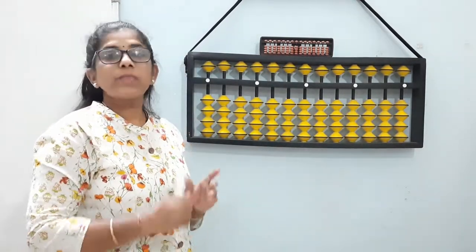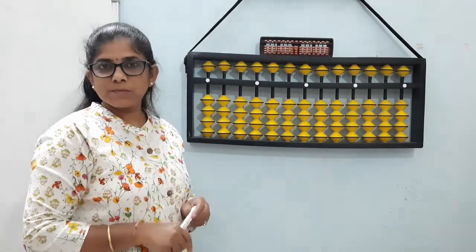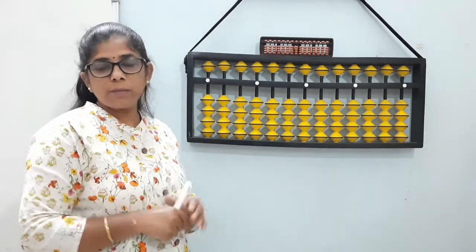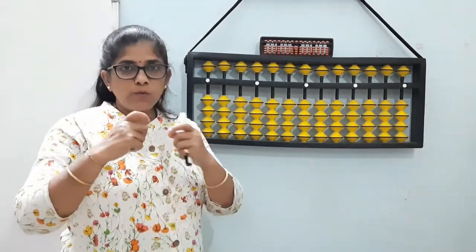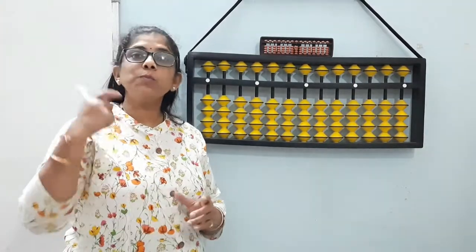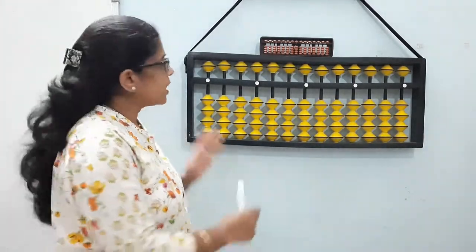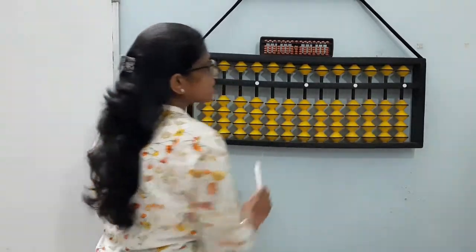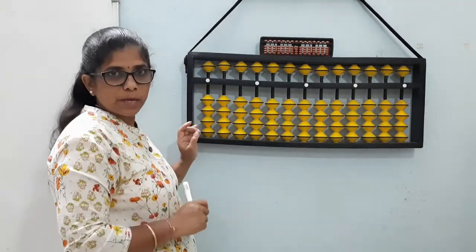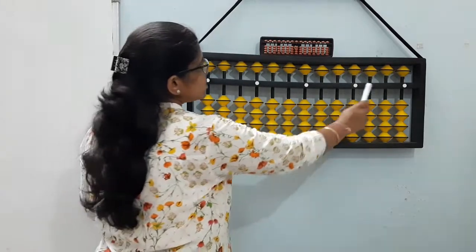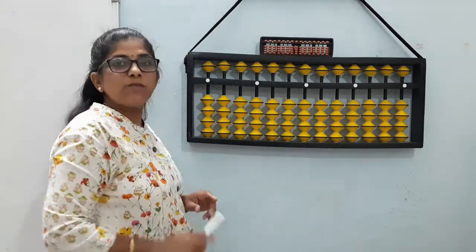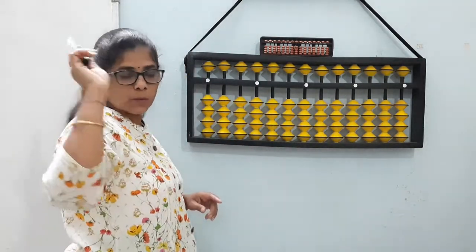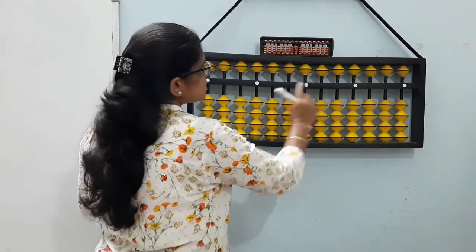Now this place, how the digits are formed. When we solve the sums of the abacus, you should know how to form the numbers. So for that how to place the beads, how to move the beads. When the beads touch this divider, the number is formed on the abacus. Now nothing is touching this divider. This means the value on the abacus is zero.